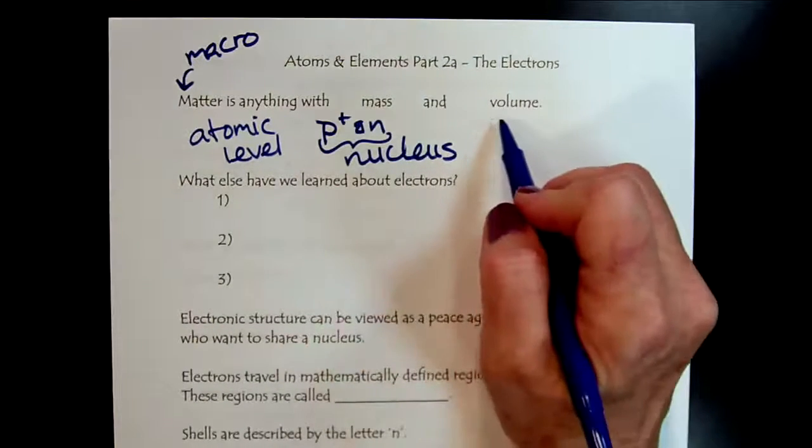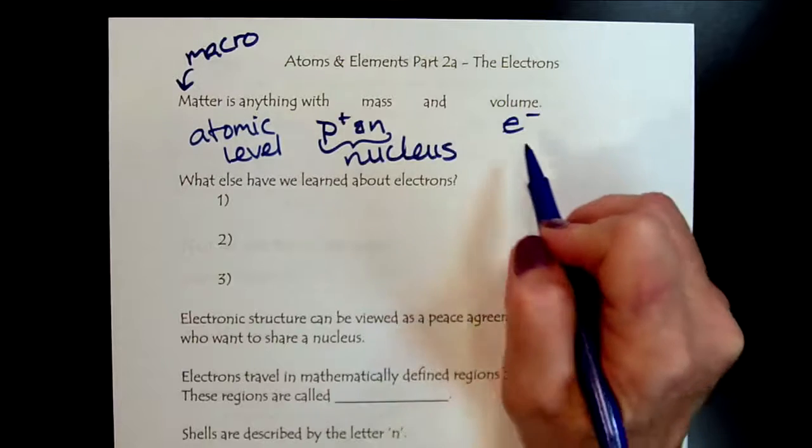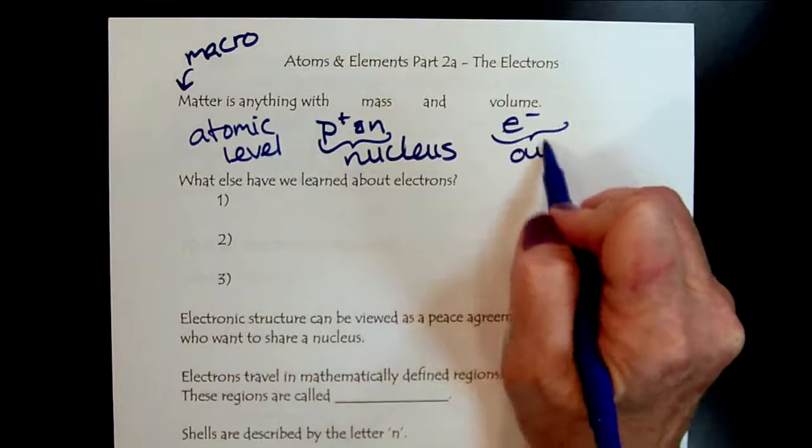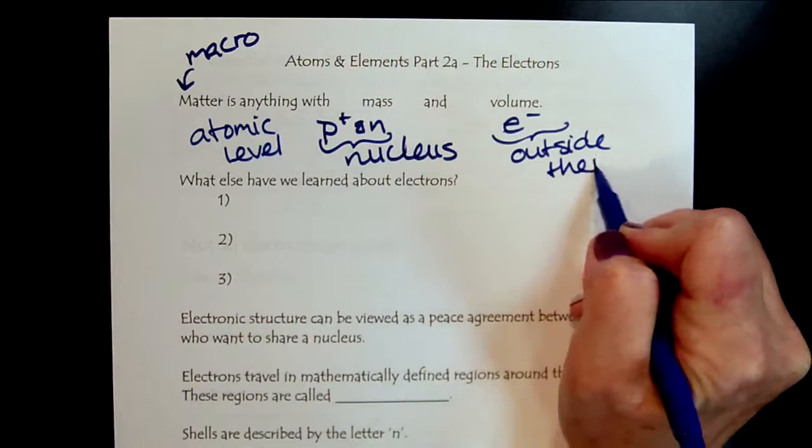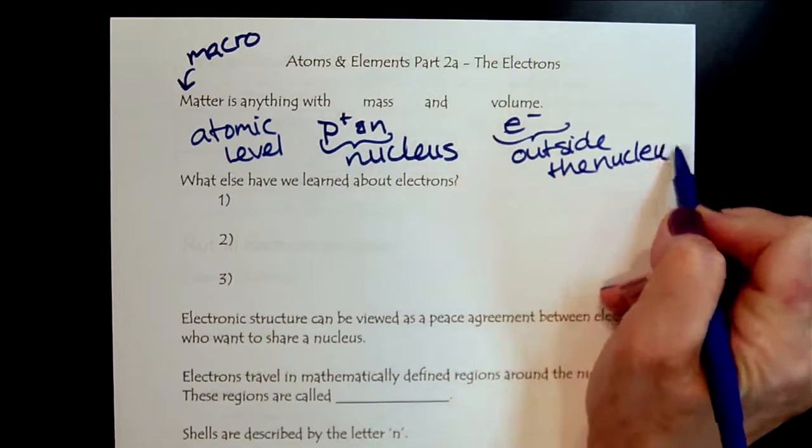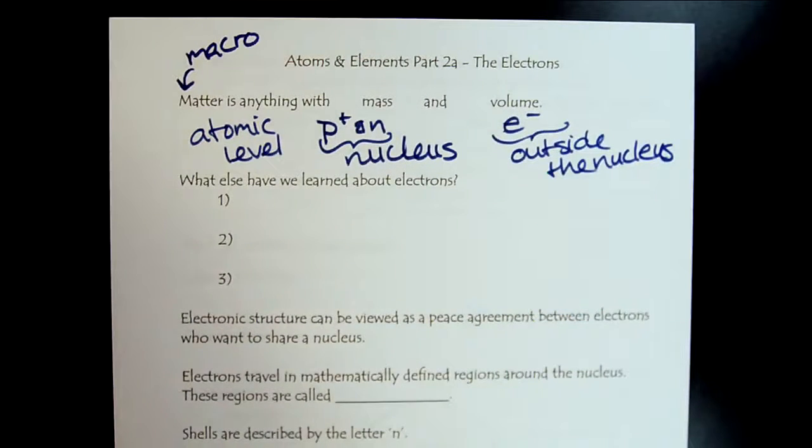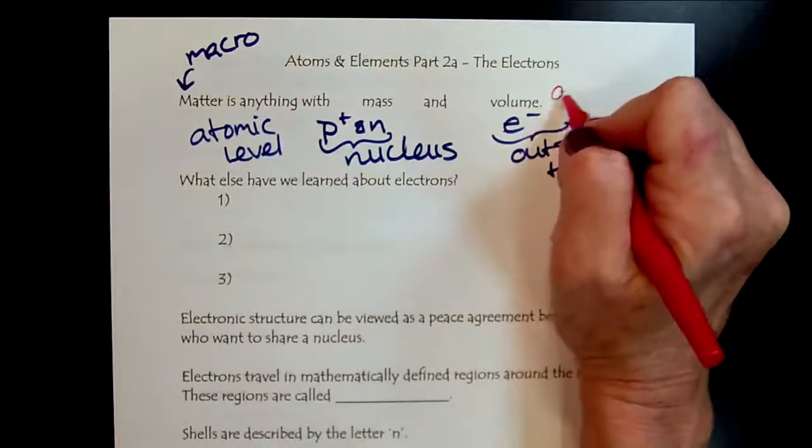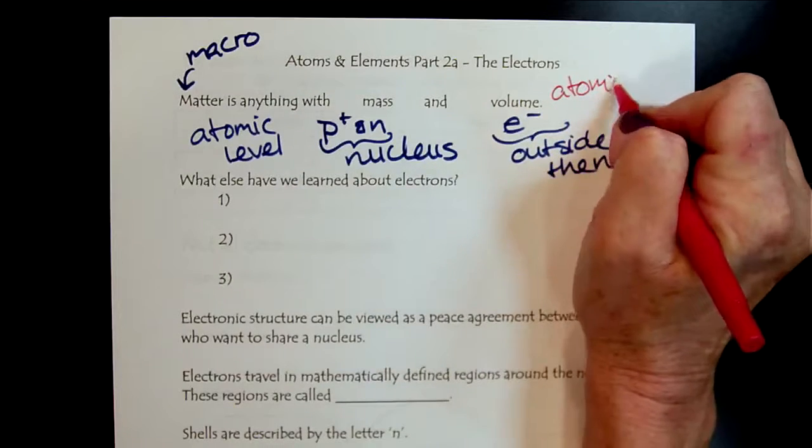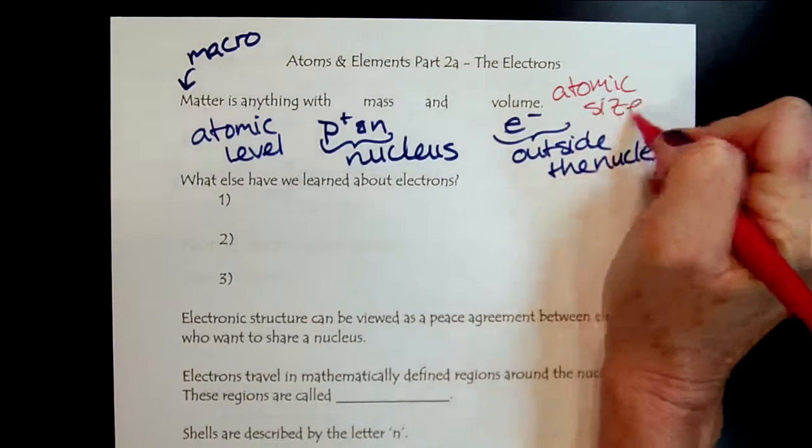And now what we're going to learn is, so where does the volume of matter come from? Well, it comes from the electrons, because those are outside the nucleus. And so this volume, this is what creates atomic size.